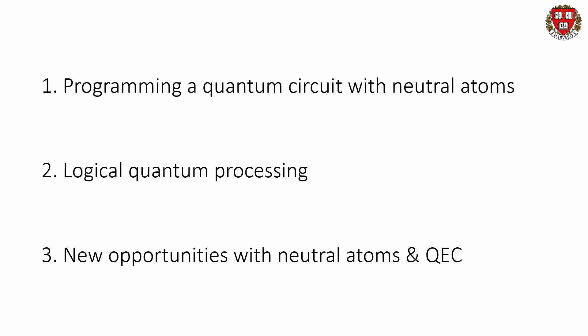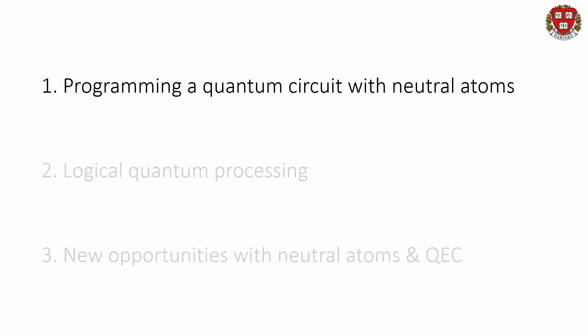In today's talk, I'm going to tell you about three things. First, I'll tell you about how we program quantum circuits with neutral atoms. Then I'll tell you about some of our experiments studying error-corrected quantum algorithms. Finally, I'll tell you about some new results giving new tools for understanding ways to control neutral atoms, as well as new opportunities in quantum error correction.